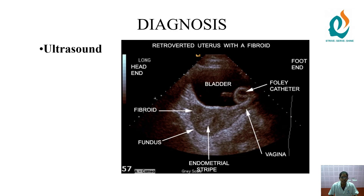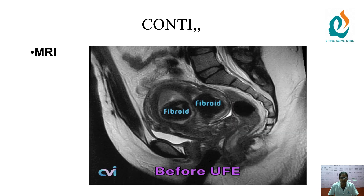For the diagnosis, the first method is ultrasound, through which we can see the fibroid uterus. The next diagnostic method is MRI.